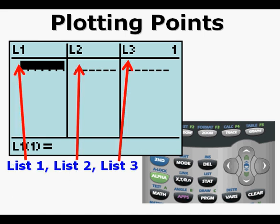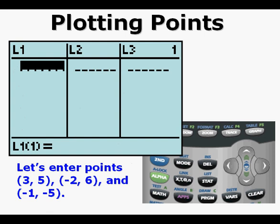These columns labeled L1, L2, and L3 are List 1, List 2, and List 3. Let's enter the points (3, 5), (-2, 6), and (-1, -5).